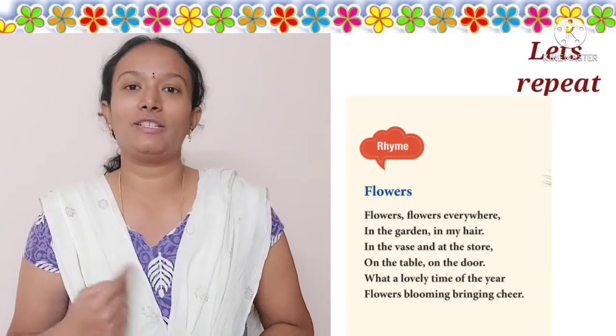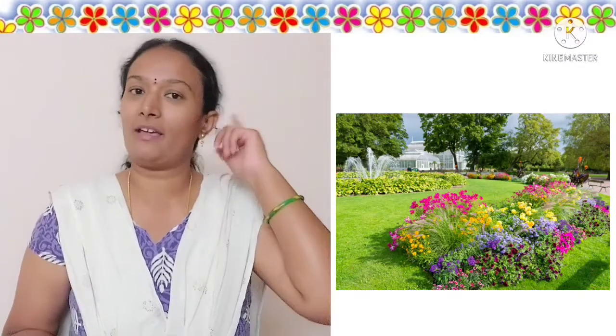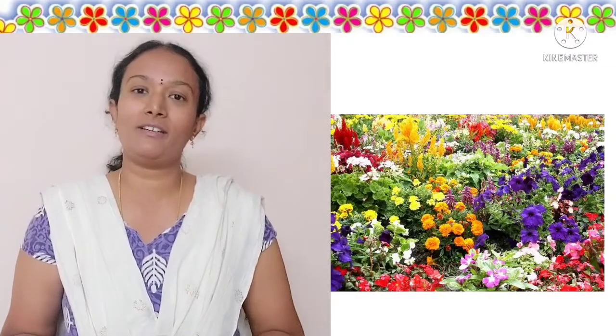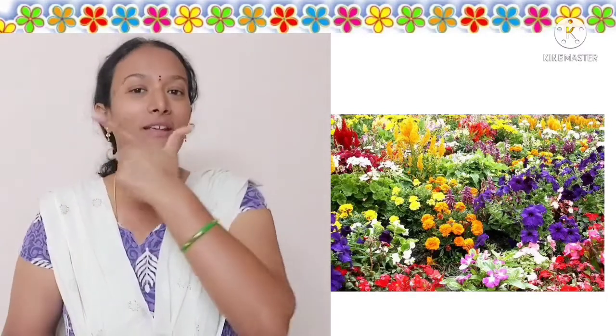Mataji will sing once; second time, you should sing along. Flowers, flowers everywhere — Flowers, flowers everywhere. In the garden, in my hair — In the garden, in my hair. In the walls, at the store — In the walls, at the store. On the table, on the door — On the table, on the door. What a lovely time of the year — What a lovely time of the year. Flowers blooming, bringing cheer — Flowers blooming, bringing cheer.